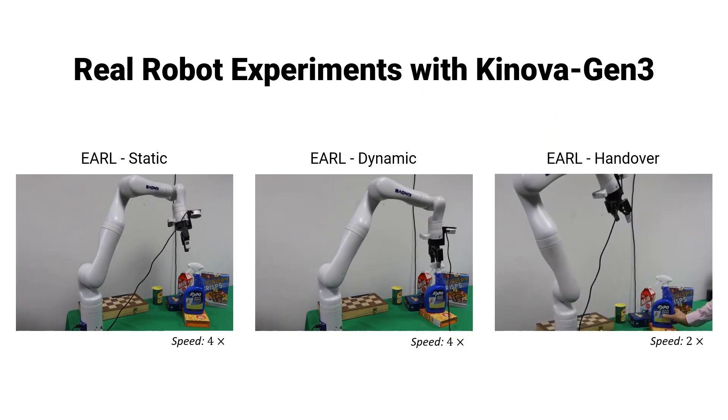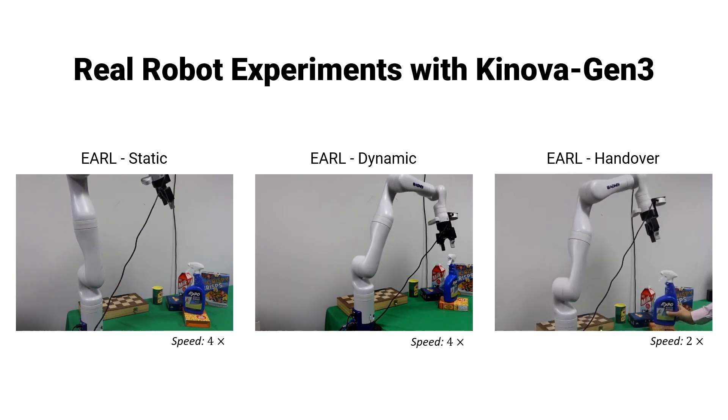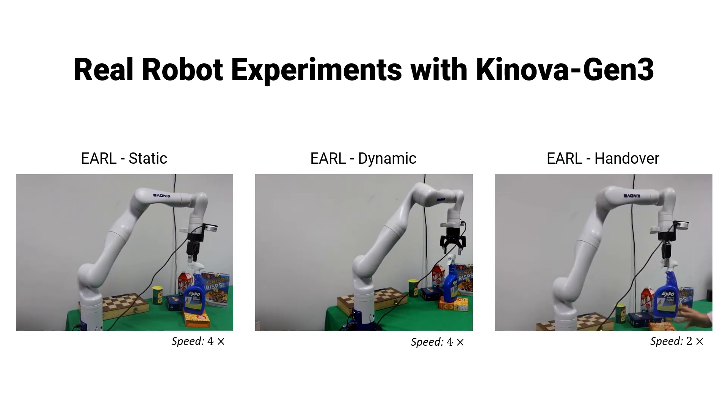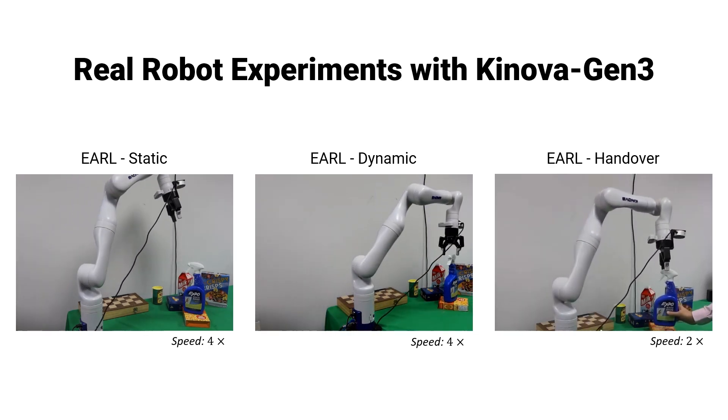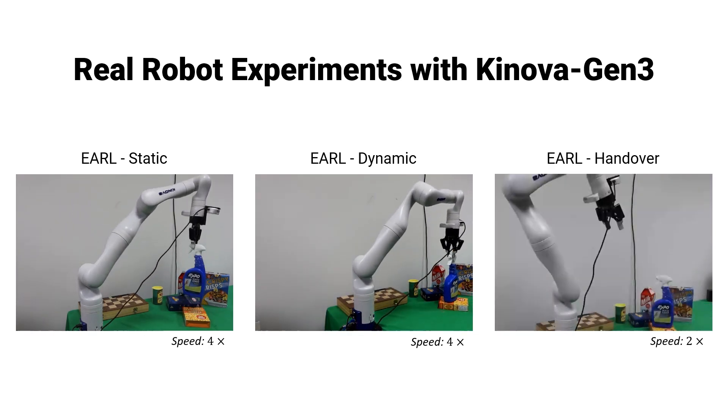We also tested our method on Kinova robot arm, which has 7 degrees of freedom, where the UR-5 has 6. With limited system identification between simulation and real robot, Kinova can still complete dynamic grasping.